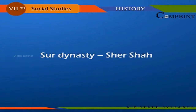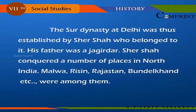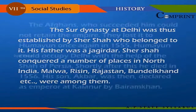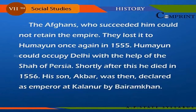Sher Shah dynasty. The third dynasty at Delhi was established by Sher Shah. His father was a Jagirdar. Sher Shah conquered a number of places in India — Malwa, Raisin, Rajasthan, Bundelkhand, etc. The Afghans who succeeded him could not retain the empire. They lost it to Humayun once again in 1555. Humayun could occupy Delhi with the help of the Shah of Persia.